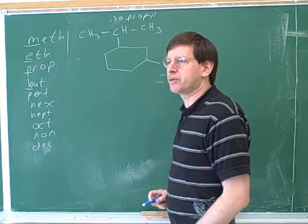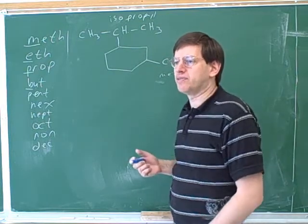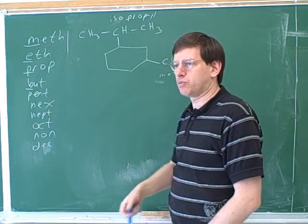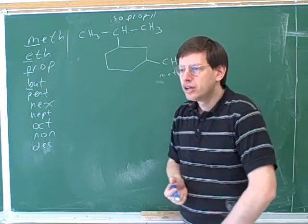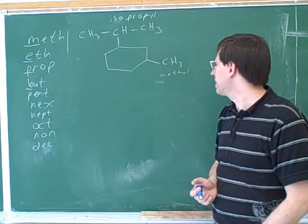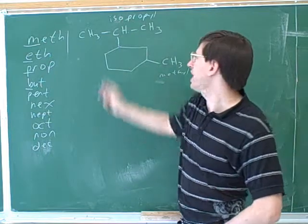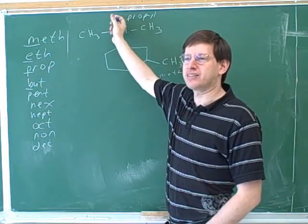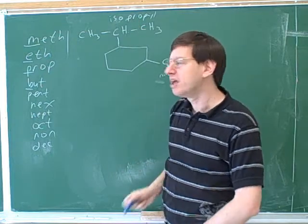All right. Now, there's two different ways to number here. We can number clockwise or counterclockwise, and those are really tied. Because if you number in one direction, you'll get the locators one and three. And if you number in the other direction, you'll get the locators one and three. So who should we give the lower number to, the isopropyl or the methyl? Isopropyl. Because it comes first in alphabetical order. And we do count iso when we're alphabetizing things. That's important here, because p comes after m, but i comes before m.